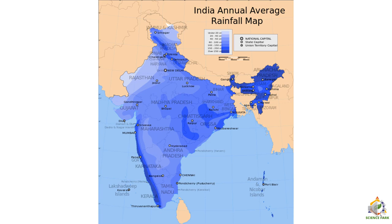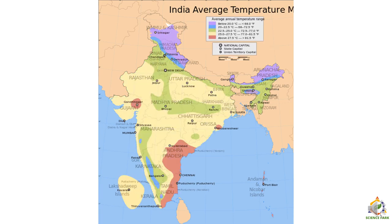Similar to rainfall, we also have the map of average temperature. As you know, temperature and rainfall depend on the geography of the location. If you go towards the north in the hilly areas, the temperature is very low — you can see the patches of violet color, which indicate low temperature. As you go towards the south, the temperature slightly increases. This is the variation of temperature.